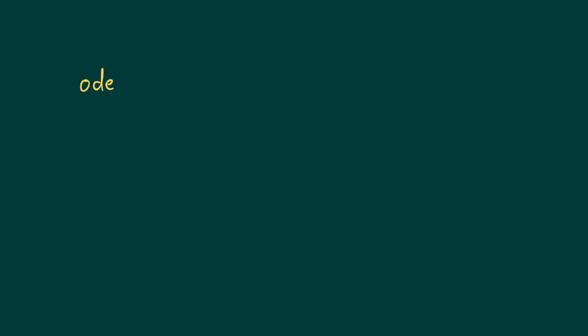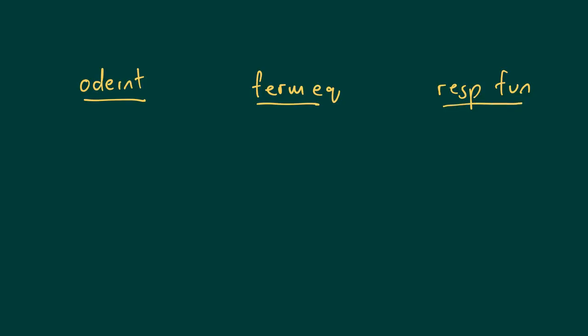When looking at the Python code, there are basically three important functions that we work with. The first one is called ODE INT, which is really our integration function. Then there's a second one which I refer to as the fermentation equation, and lastly we have the response function.